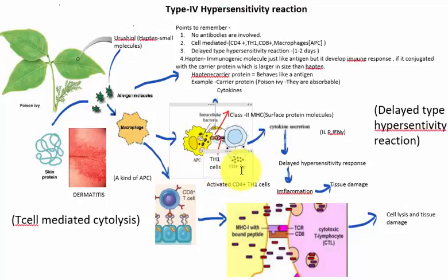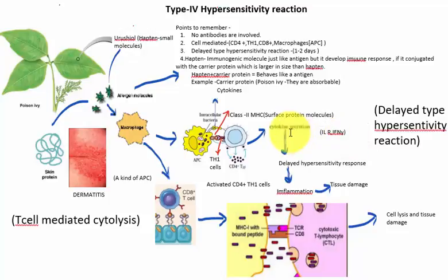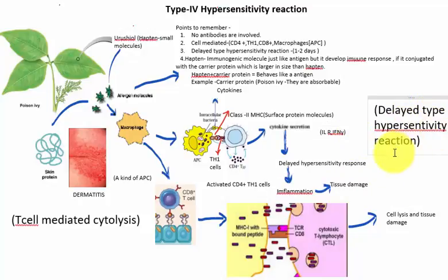The CD4 glycoprotein, generally found on the surface of the T helper cell, then combines with the MHC class II protein. This activates the CD4+ Th1 cell, which releases cytokines — specifically interleukin and interferon-gamma. These then cause the delayed hypersensitivity reaction. Inflammation occurs after one or two days and it damages the tissue. This is the mechanism of delayed type hypersensitivity reaction.